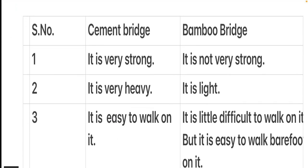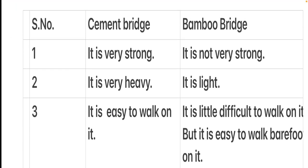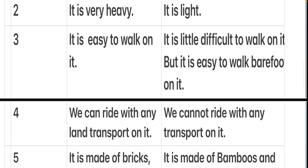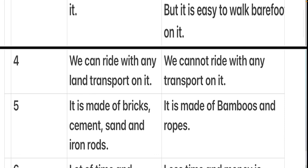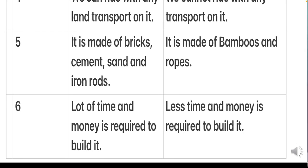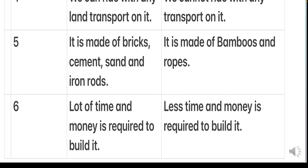Let's read the differences once again. First: very strong / not very strong. Second: very heavy / light. Third: easy to walk on / difficult to walk on, but easy barefoot. Fourth: can ride with any land transport / cannot. Fifth: made of bricks, cement, sand, and iron rods / made of bamboos and ropes. Sixth: lot of time and money required / less time and money required.